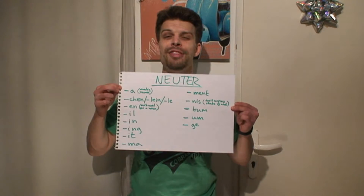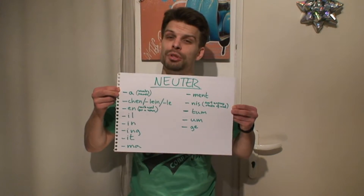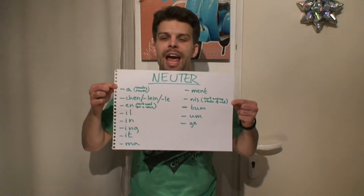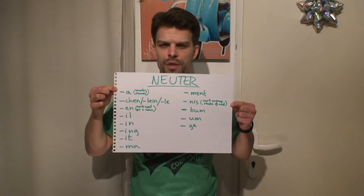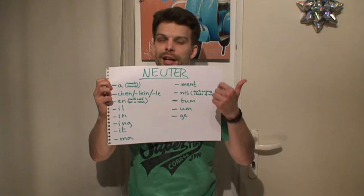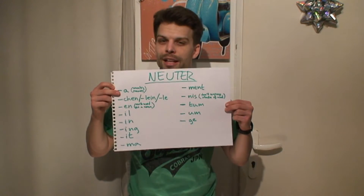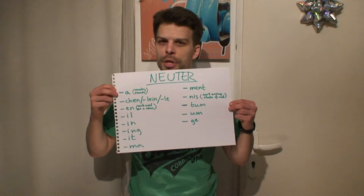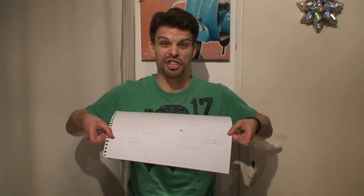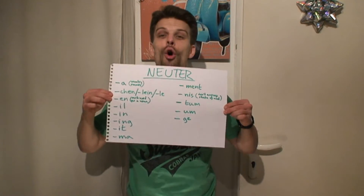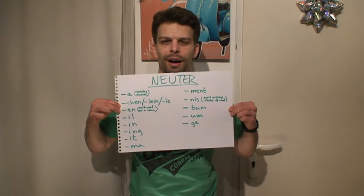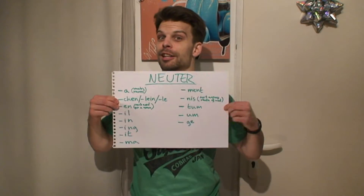This would not be complete without neuter. The same principles apply — these are suffixes for neuter nouns. The definite article for neuter is 'das', and the indefinite article is 'ein'. So to recap the full set: der, die, das — and ein, eine, ein.